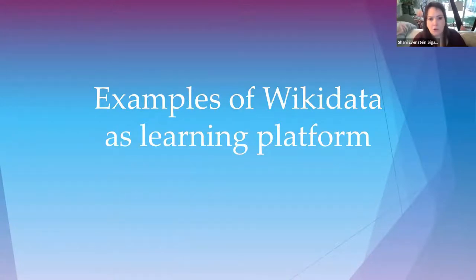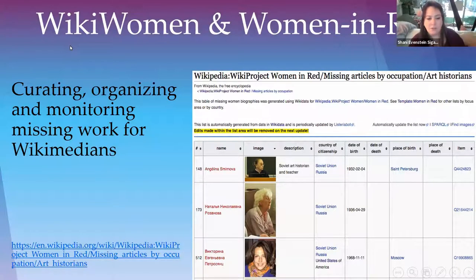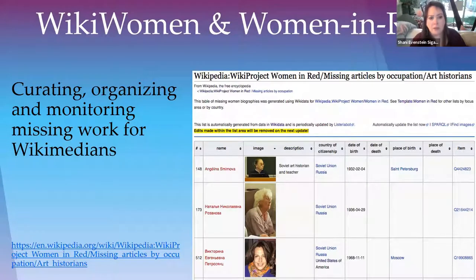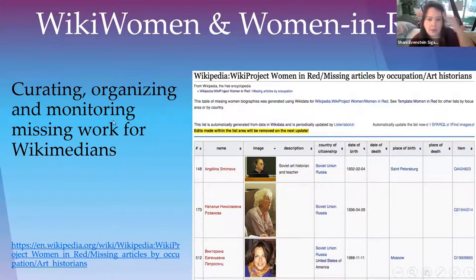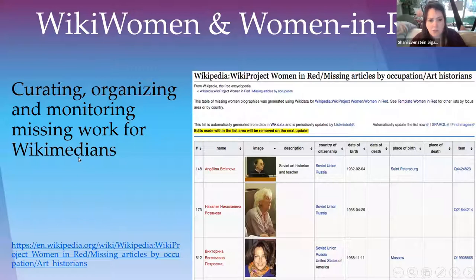I want to delve into some examples from around the world — not of apps but of projects people did, mostly focused on education. The first thing I'll mention, though not completely related to education, is Women in Red. This uses Listeriaist — auto-generated lists from Wikidata — to help us as Wikimedians monitor the knowledge gaps we need to address, and organize, curate, and monitor missing work. This could be applied to many other Wikimedia projects to help us curate our work as Wikimedians.